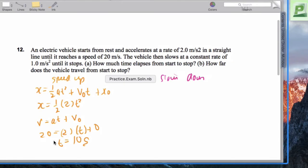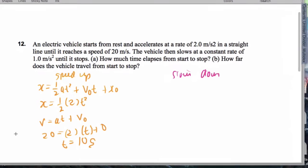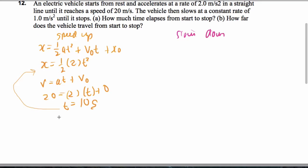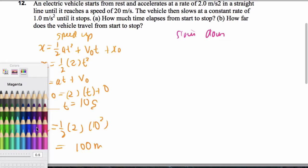So I can actually plug this into my x right here. Let's go ahead and do that. So x equals 1 half times 2 times 10 squared. And that's going to give me 100 meters as I start.